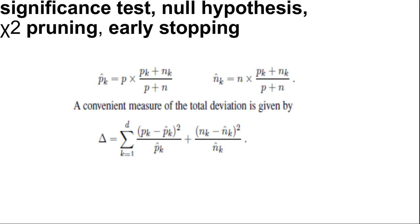Delta equals the summation of (pK - p̂K)² divided by p̂K plus (nK - n̂K)² divided by n̂K where k equals 1 to d. Under the null hypothesis, the value of delta is distributed according to the chi-square distribution with V minus 1 degrees of freedom. We can use chi-square tables or a standard statistical library routine to see if a particular delta value confirms or rejects the null hypothesis.